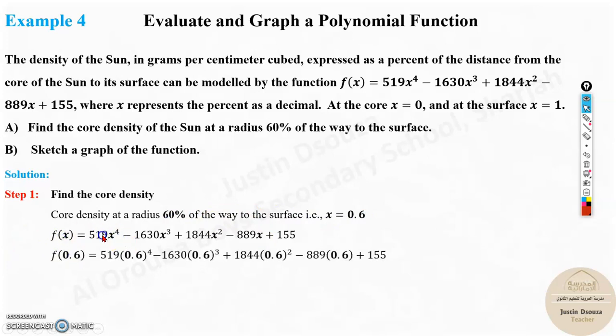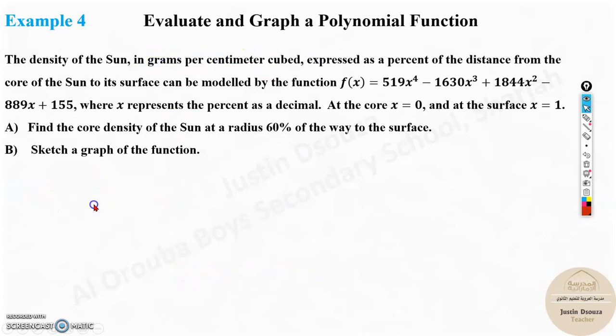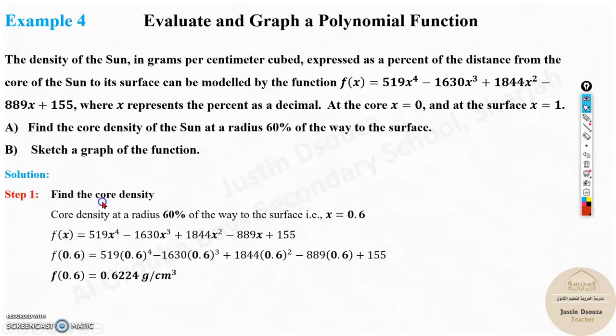The core density at radius 60% of the way to the surface is 0.6. Instead of x, just substitute these values of 0.6 and solve. Put it in the calculator, and you'll get it. The unit is mentioned, grams per centimeter cubed. And that is the first part. That is over.